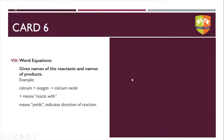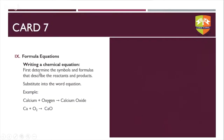In a word equation like calcium plus oxygen giving calcium oxide, the plus sign means 'reacts with'. Sometimes you will find 'calcium plus oxygen plus heat' — heat on the reactant side means heat is taken in; heat on the product side means heat is evolved. The arrow means 'yields' — it produces — and also shows the direction of the reaction, from reactant side to product side.